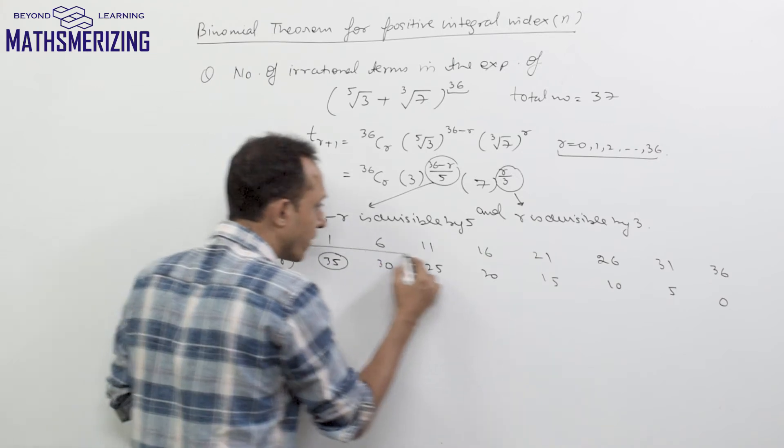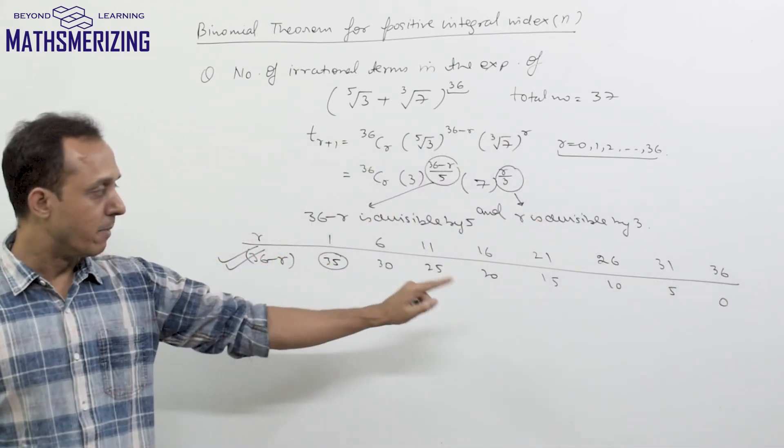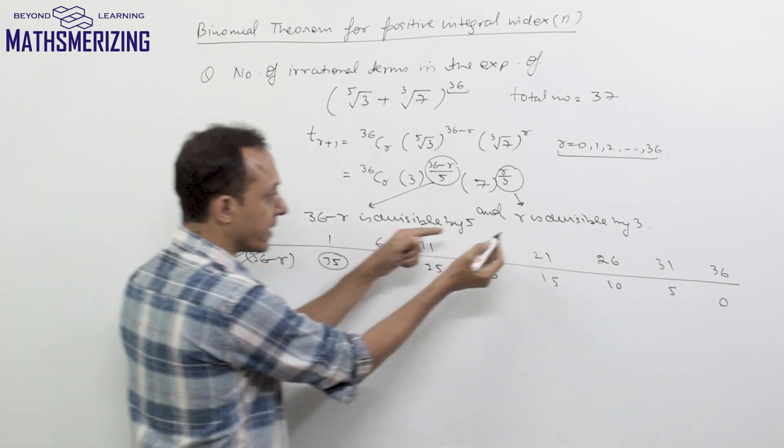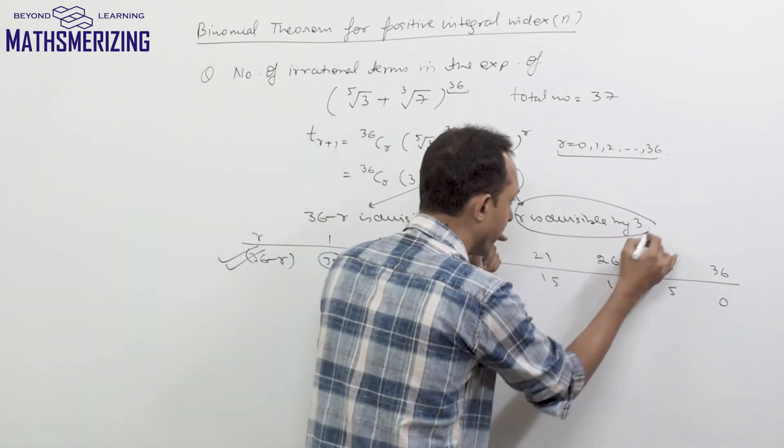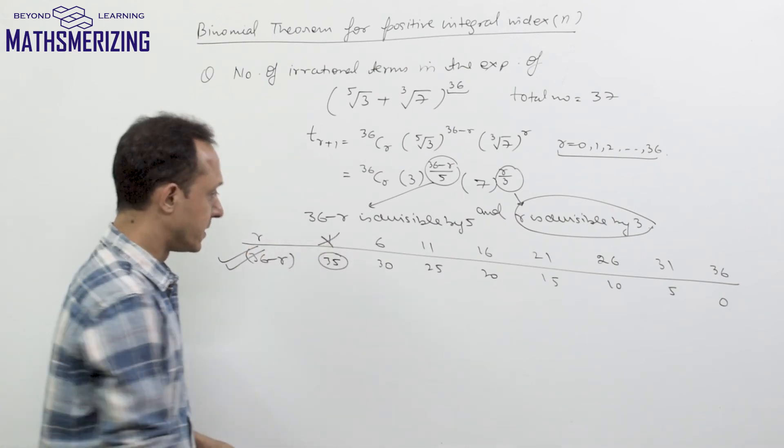So for all these values of r, this 36 minus r is divisible by 5. Now I need to find the condition also that this r should be divisible by 3. So out of all these values of r, 1 is not divisible by 3, 6 is divisible by 3, 11 is not, 16 is not.